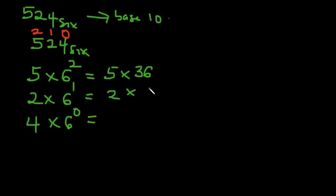So 2 times—6 to the power of 1 is 6. 4 times—6 to the power of 0 is 1. So 5 multiplied by 36, that's 180. 2 multiplied by 6 is 12. 4 multiplied by 1, that's 4. What do I do? I add all of them together. 180 plus 12 plus 4, that's going to be 196 in base 10.